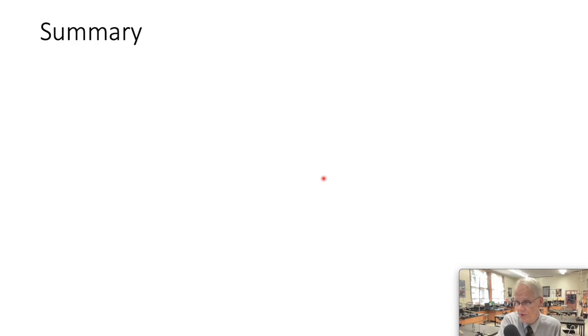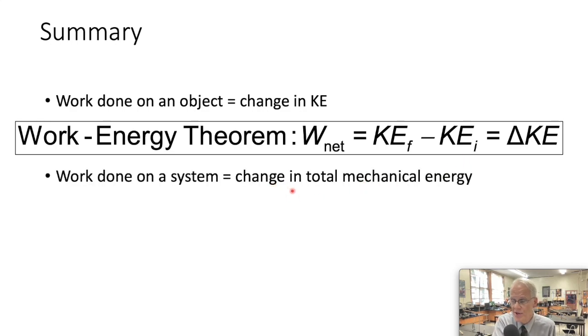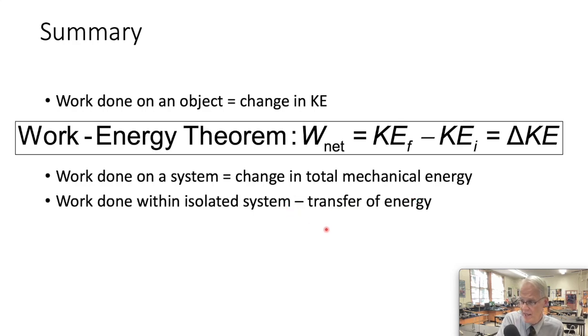Let's look at what we know so far. The work done on an object is going to change its kinetic energy. The work-energy theorem says that the net work is going to equal the change in the kinetic energy or delta KE or final kinetic energy minus initial kinetic energy. The work done on a system is going to change the total mechanical energy of that system. The work done within an isolated system there you're just going to be transferring energy and that's what we'll look at next. The conservation of energy where we get energy going between two different types of energy.